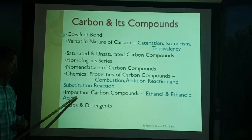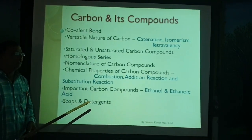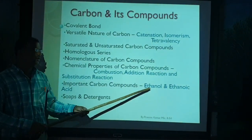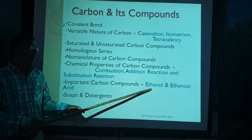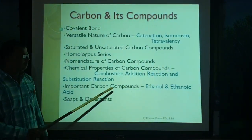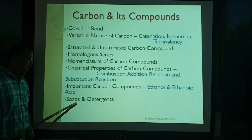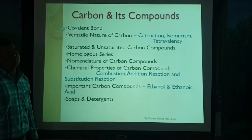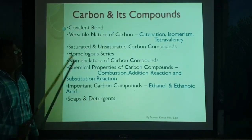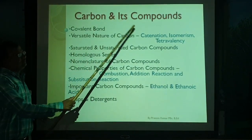Next are some important carbon compounds — those are Ethanol and Ethanoic Acid. We are going to discuss their important chemical properties and uses. The last topic of the chapter is Soaps and Detergents — how soaps are prepared and how detergents are prepared. These are all the topics we are going to discuss in this chapter, Carbon and its Compounds.